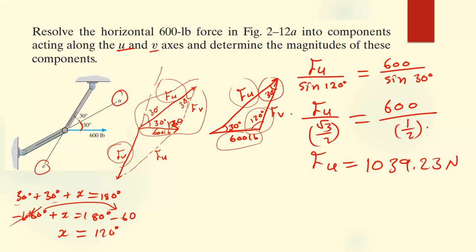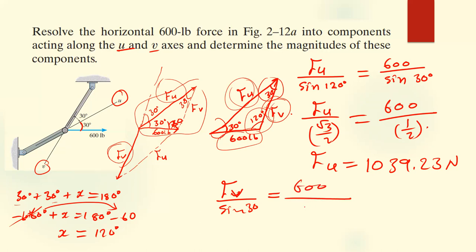For Fv we can use either the sine rule or the cosine rule since almost everything is given. Using the sine rule: Fv over sine 30 equals 600 over sine 30. The sine 30 terms cancel, giving Fv equal to 600 newtons. Do you have any questions on this? Feel free to ask.